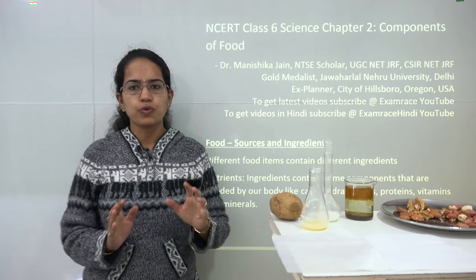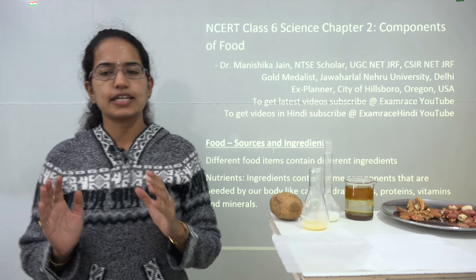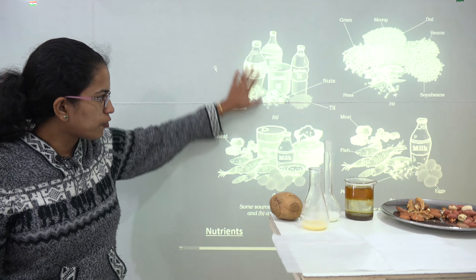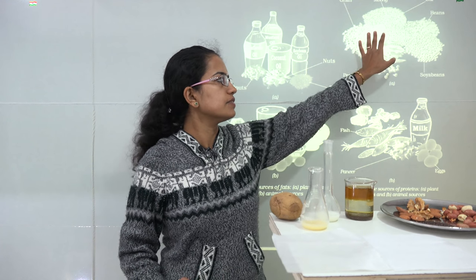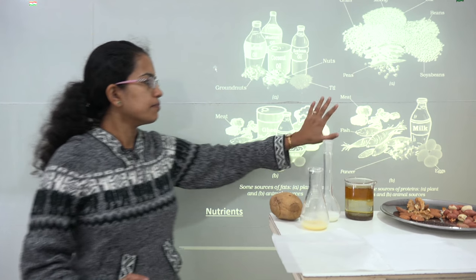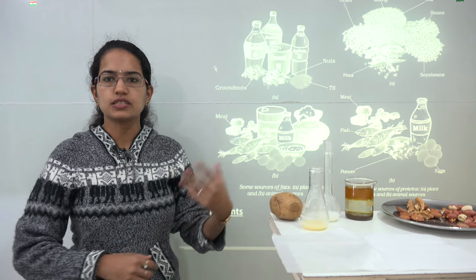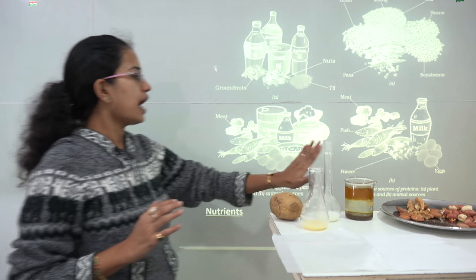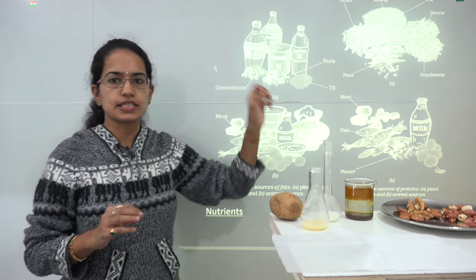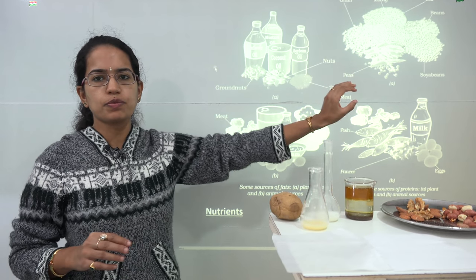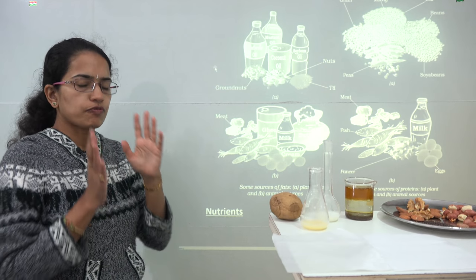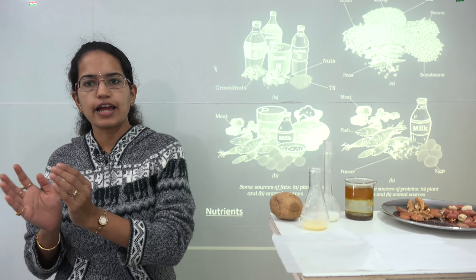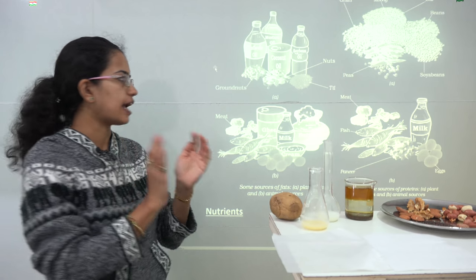When we talk about the components of food, we first talk about the components that are derived either from plants or from animals. Food products derived from animals include meat, fish, and all milk products such as cheese, paneer, and butter. Food products derived from plants include pulses and nuts. So food products can be classified into two heads: those derived from plants and those derived from animals.